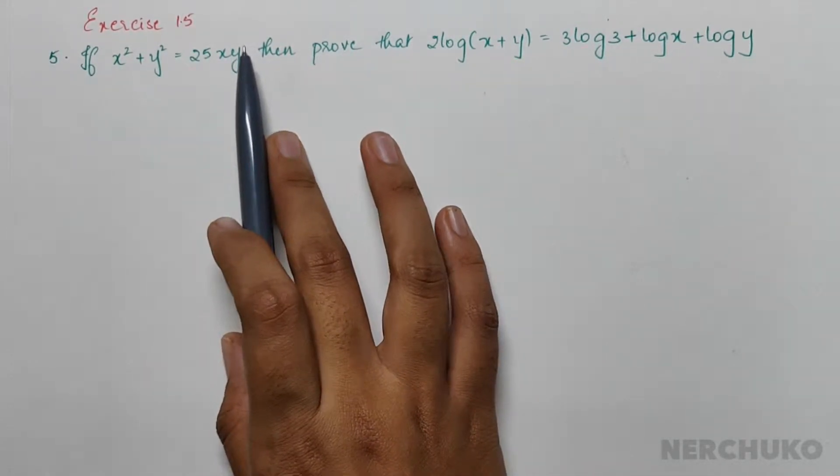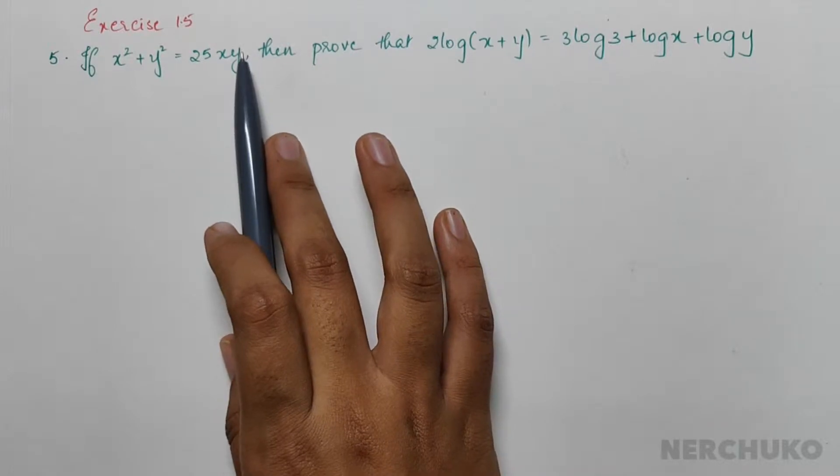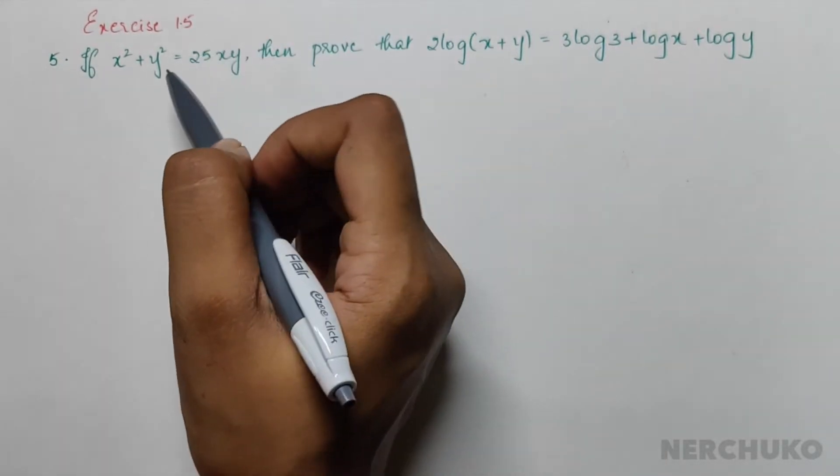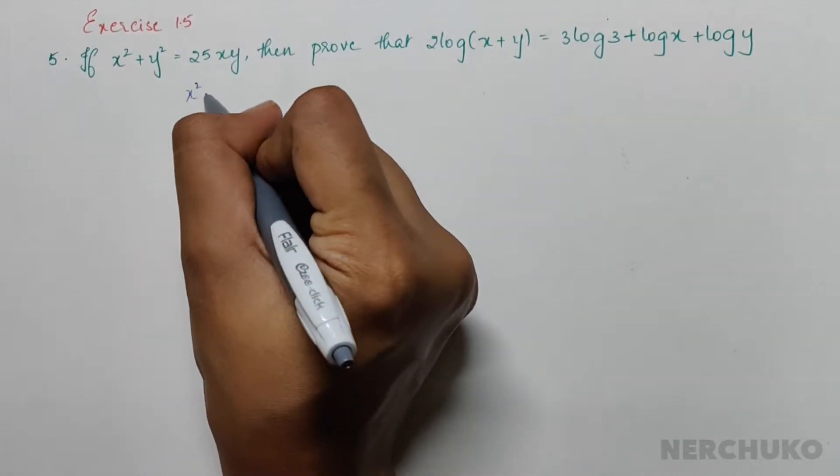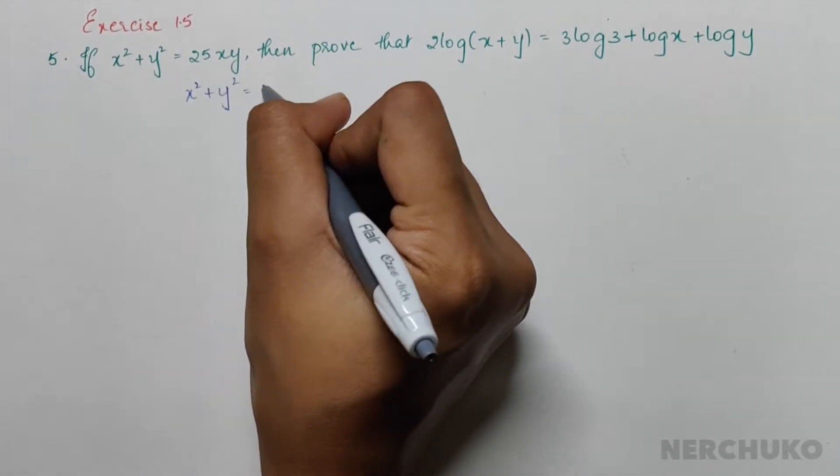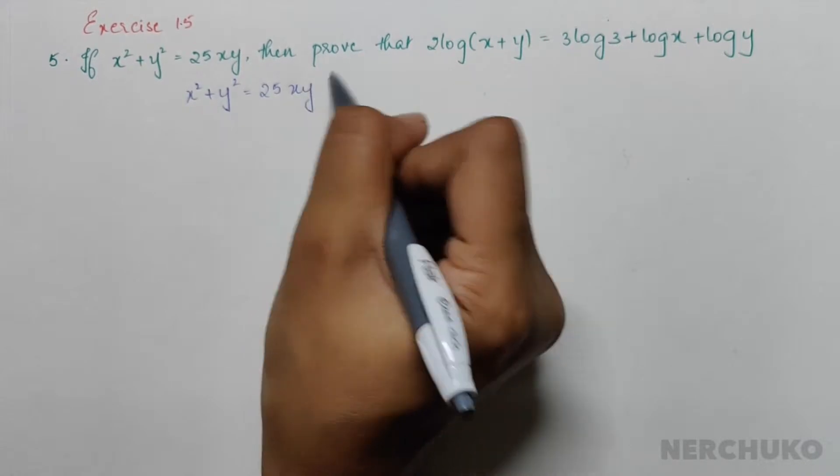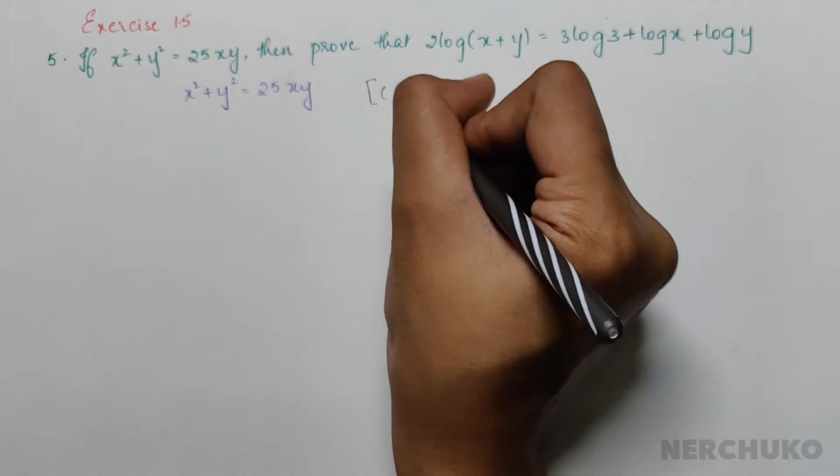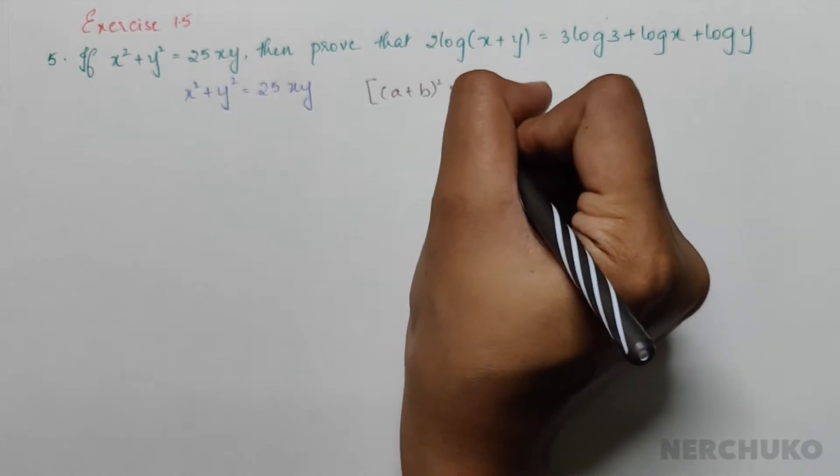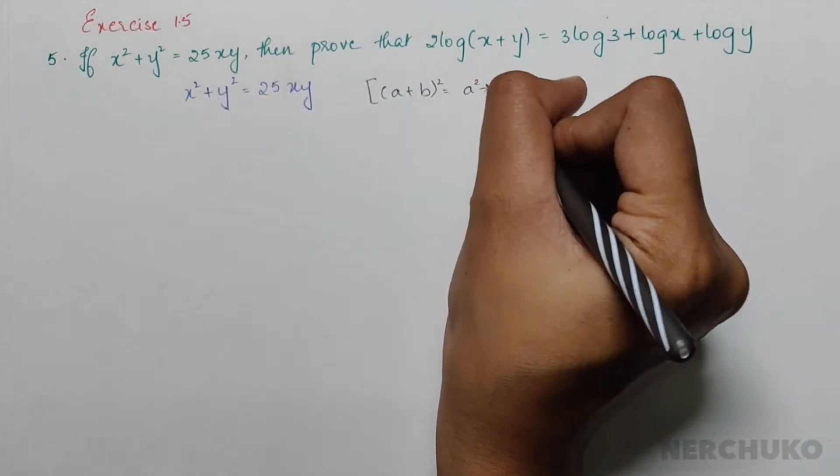Let me consider this equation: x² + y² = 25xy. We know that (a+b)² = a² + b² + 2ab.